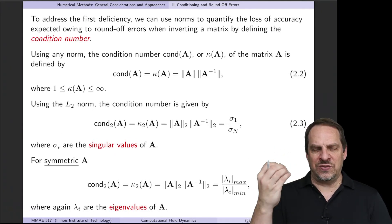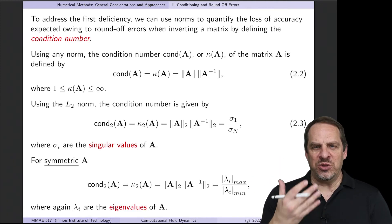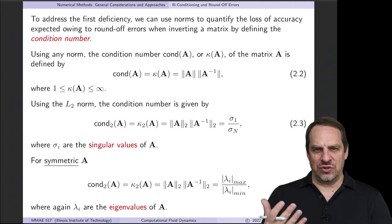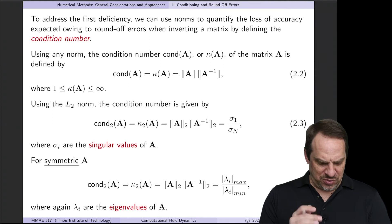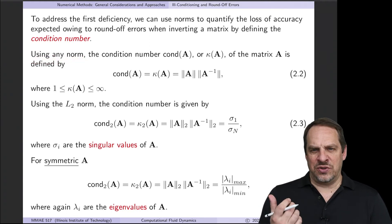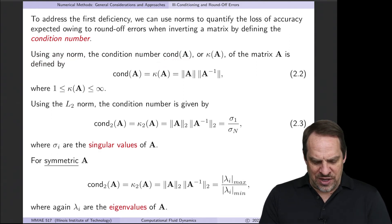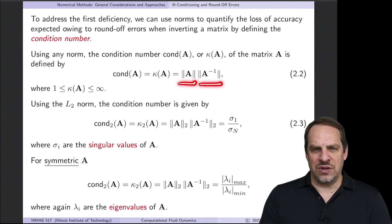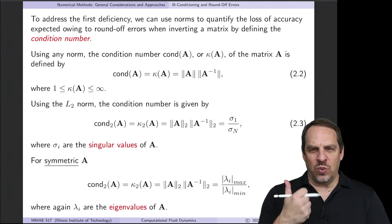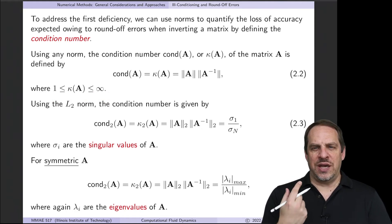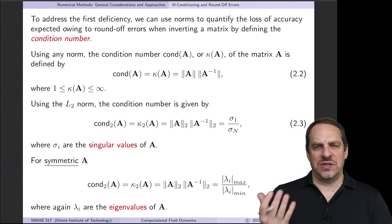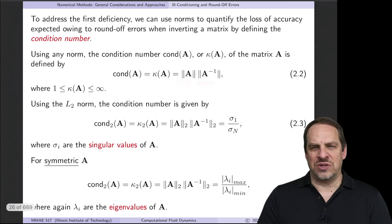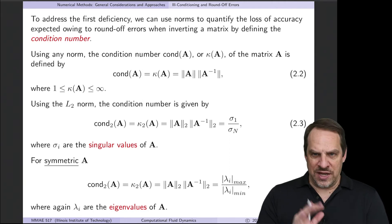So we have the determinant — keep its definition and deficiencies in mind — and now let's think about another way to quantify how amenable a system of equations is to giving us an accurate solution of Au = b. The condition number of A, or κ(A), using L2 norms, is equal to the norm of A times the norm of the inverse of A. That gives a condition number between one and infinity. One is perfectly conditioned, infinity is the worst case. The larger the condition number, the worse the conditioning — we say the system is ill-conditioned. It's a property of the matrix itself, not the right-hand side vector b.